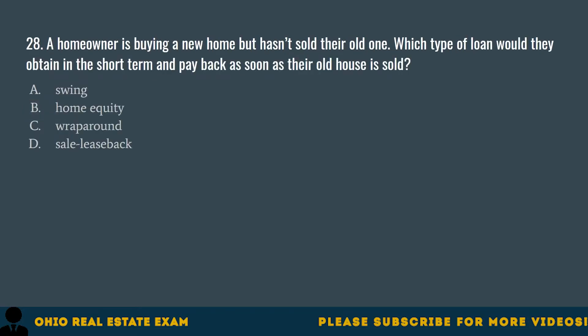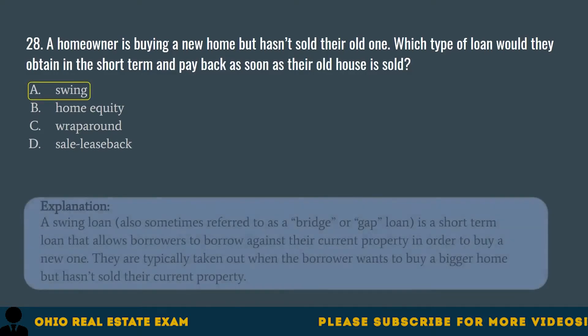Question 28. A homeowner is buying a new home but hasn't sold their old one. Which type of loan would they obtain in the short term and pay back as soon as their old house is sold? A. Swing. B. Home equity. C. Wrap around. D. Sale lease back. The correct answer is A. Swing. A swing loan — also sometimes referred to as a bridge or gap loan — is a short-term loan that allows borrowers to borrow against their current property in order to buy a new one.